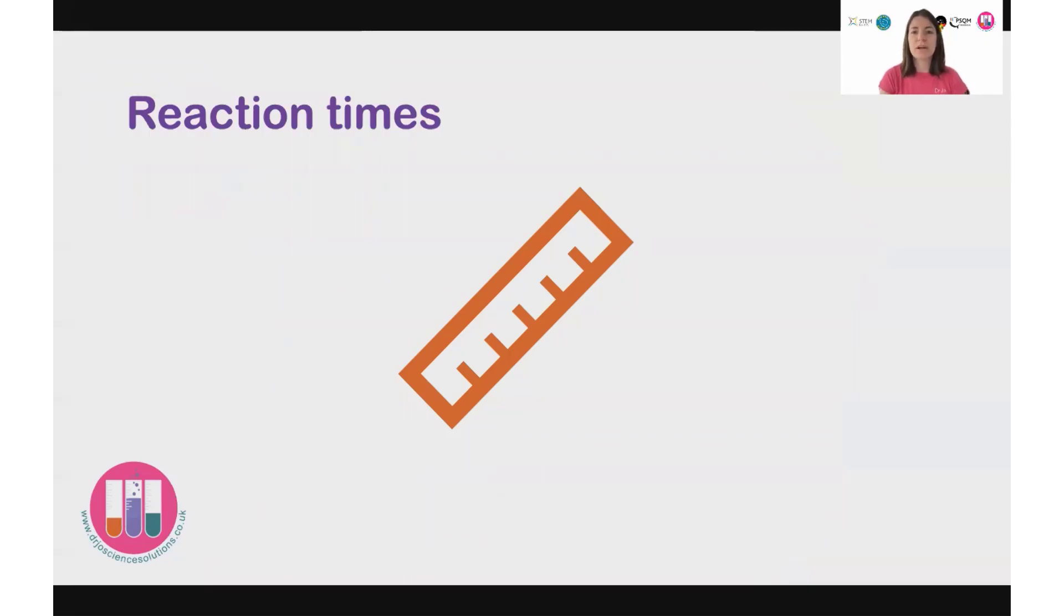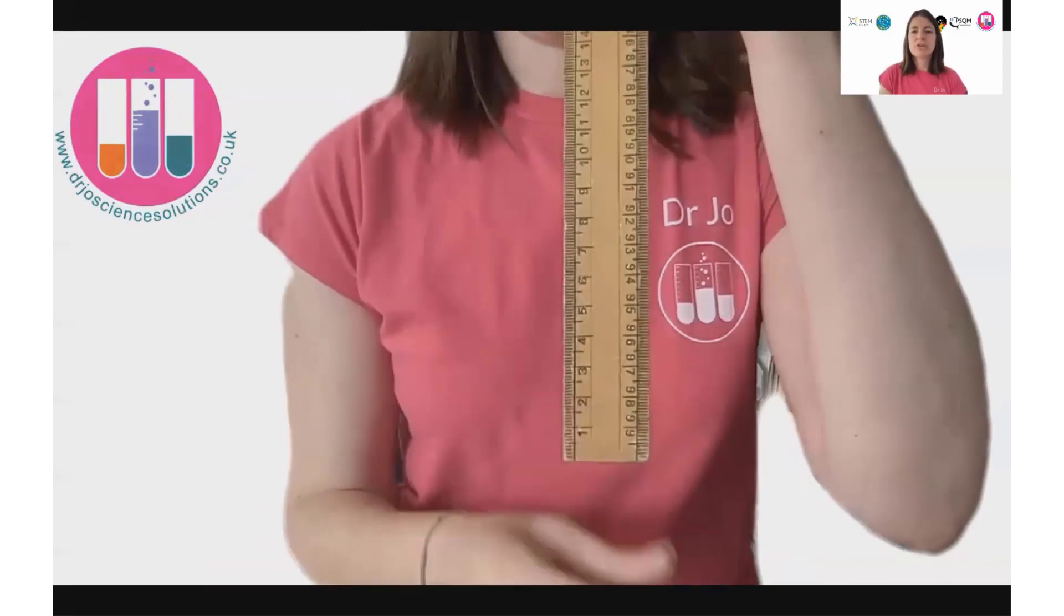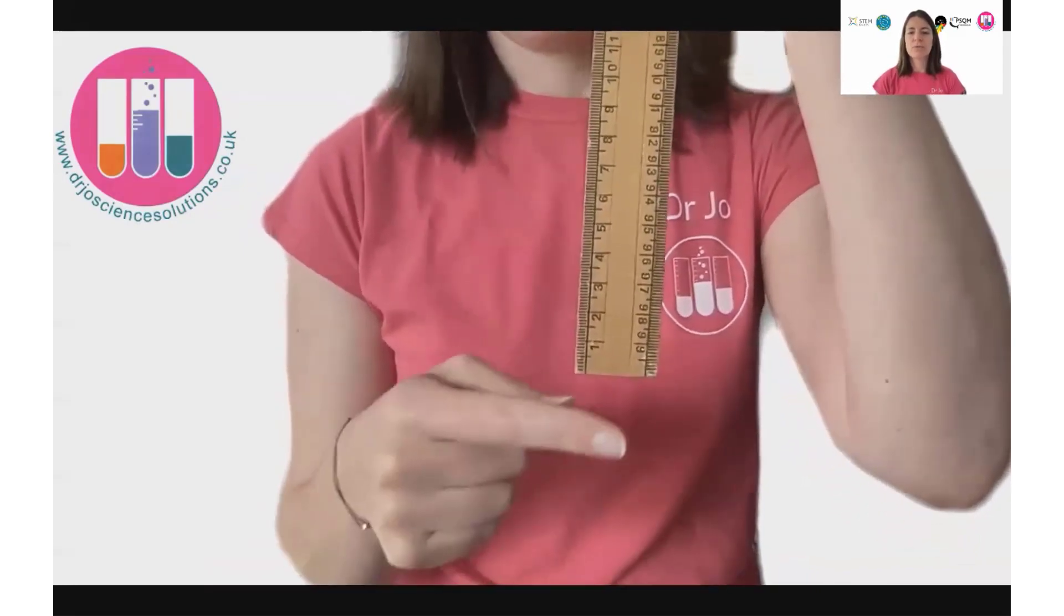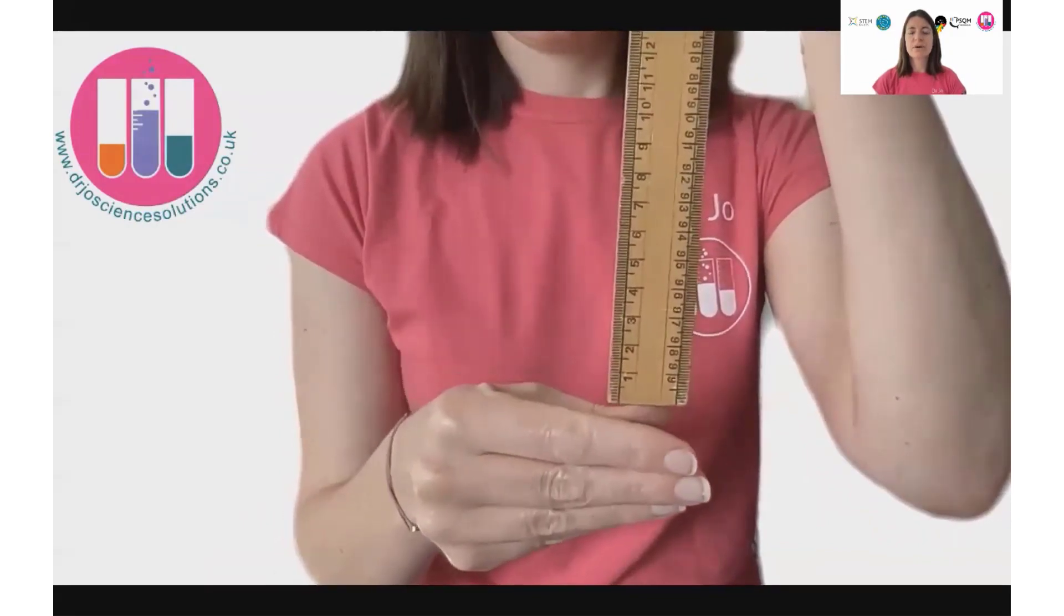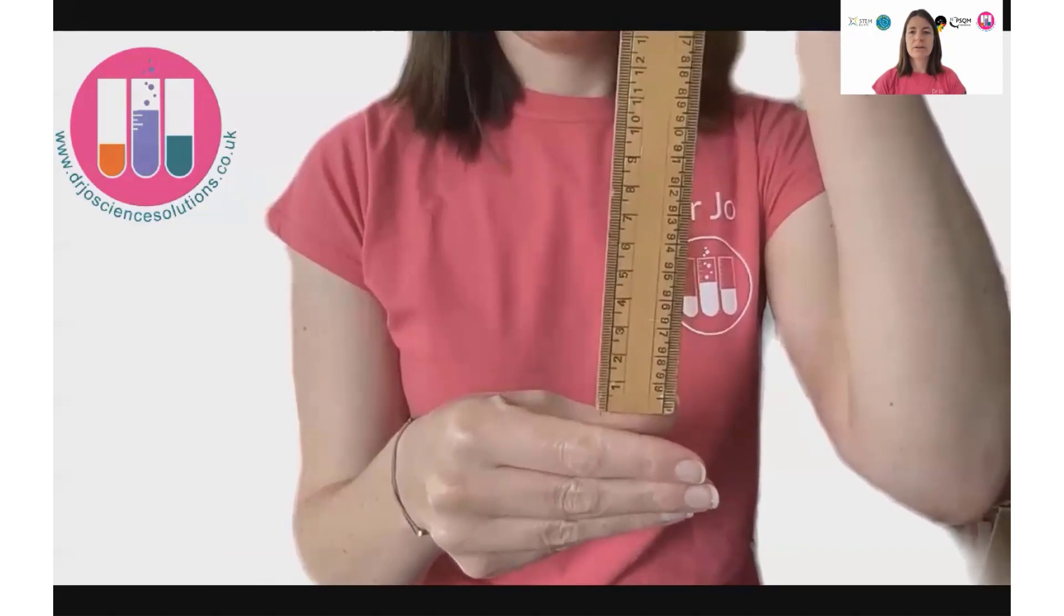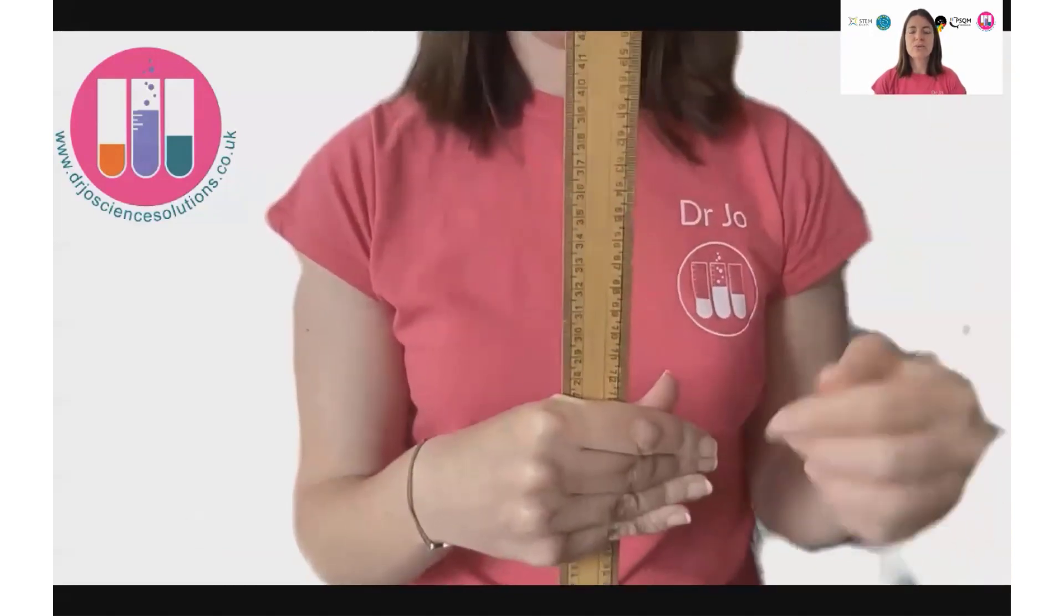So you're going to need a ruler for this activity. So here I have a ruler, and ideally you'll have a partner as well, because we're going to get one person to hold the ruler and another person to catch it. So you can see here, here's my ruler, right at the bottom here, we're going to start at this side. So there's a zero, I'm not touching the ruler, you're going to ask your partner to drop the ruler at a random point, and then you need to catch it.